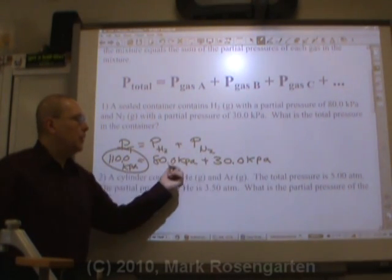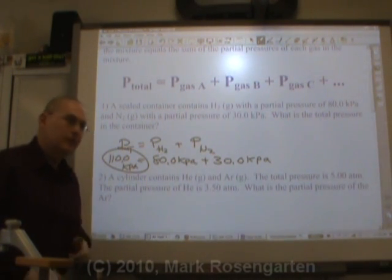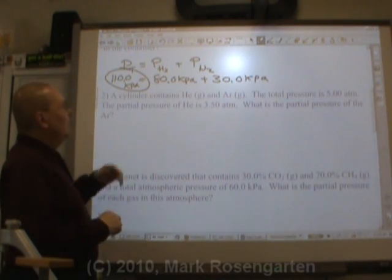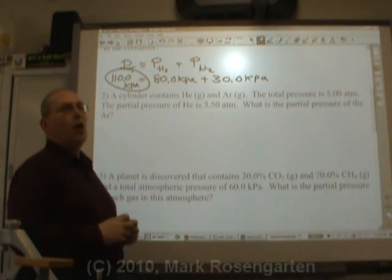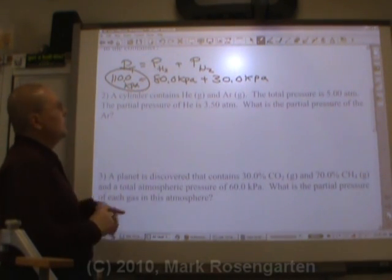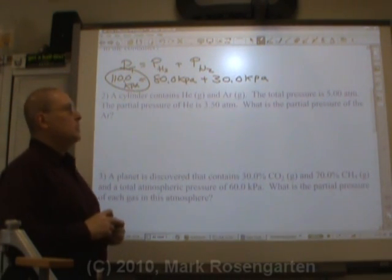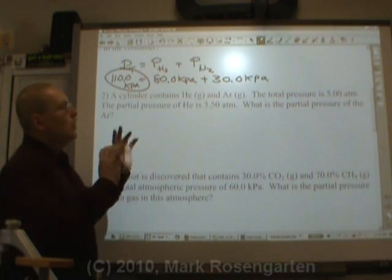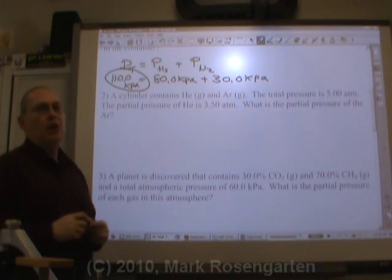By combining the partial pressures of the two gases in the mixture. Two, the cylinder contains helium gas and argon gas. The total pressure is 3.5 atmospheres. The partial pressure of the helium is 3.50 atmospheres. What is the partial pressure of the argon?